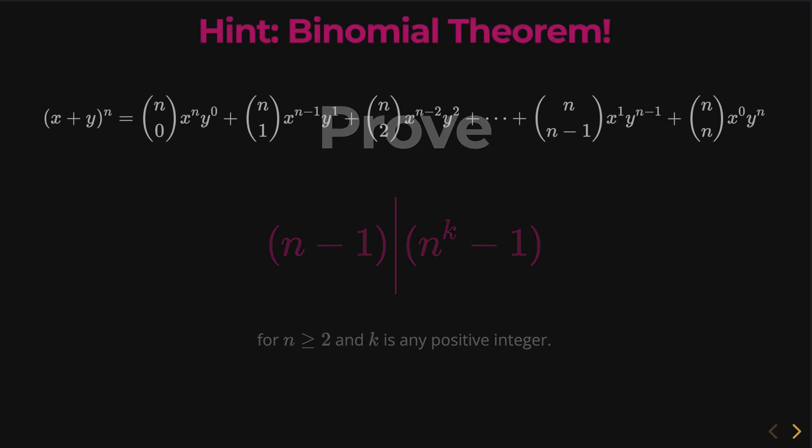So when going about this proof, you might want to think of the binomial theorem. And the binomial theorem I have right here, when you have x plus y to some exponent, the expansion of that will look like something like this. This is what the binomial theorem is.